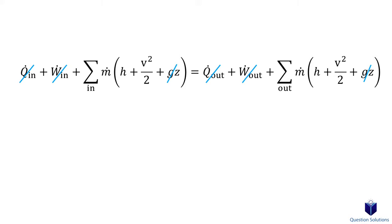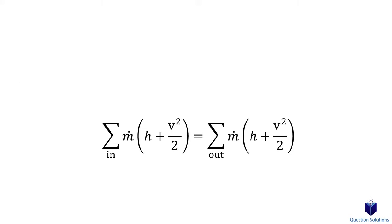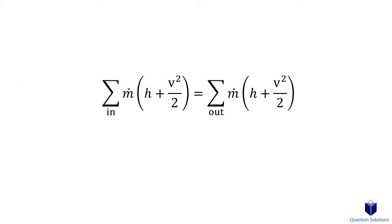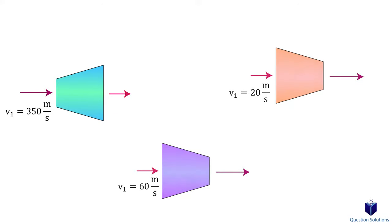Keeping this in mind, our big energy balance equation simplifies to just enthalpy change and velocity change. Remember that enthalpy change can be found using the equation: specific heat multiplied by the change in temperature. Let's go through some examples to see how we can apply what we learned.